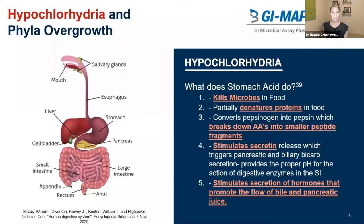HCL also stimulates secretin release, which is going to trigger our pancreatic and biliary bicarb secretion, providing a proper pH for the action of our digestive enzymes in the small intestine. The more acidic your stomach is, the more alkaline your small intestine is, which is exactly what it needs to be for the enzymes to work optimally and to further break down our macronutrients. HCL also stimulates the secretion of hormones that promote the flow of bile and pancreatic juices, and our bile and pancreatic juices have huge antimicrobial properties. So both stomach acid and bile/pancreatic juices are so important in terms of preventing overgrowth.